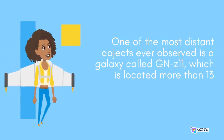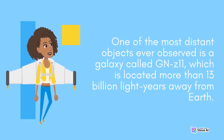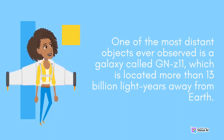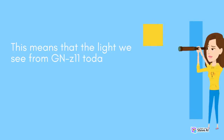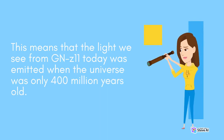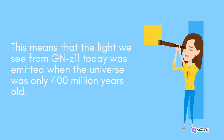One of the most distant objects ever observed is a galaxy called GNZ-11, which is located more than 13 billion light-years away from Earth. This means that the light we see from GNZ-11 today was emitted when the Universe was only 400 million years old.